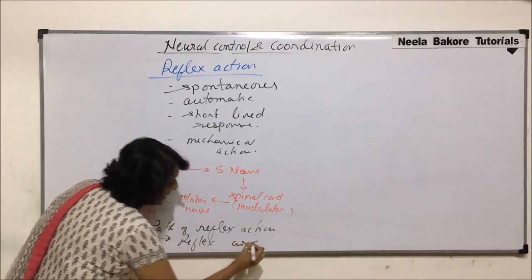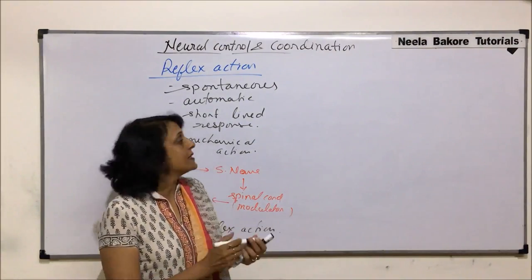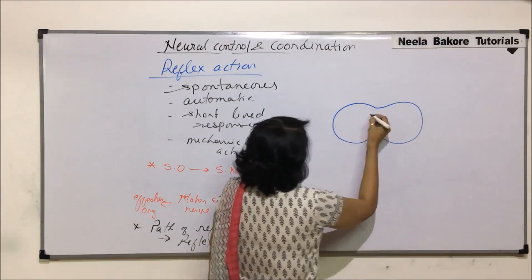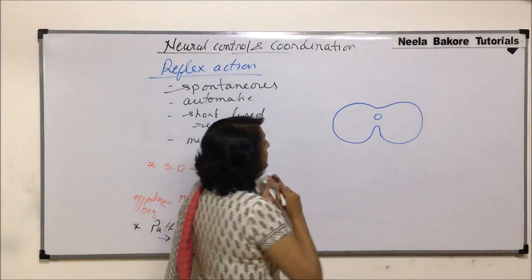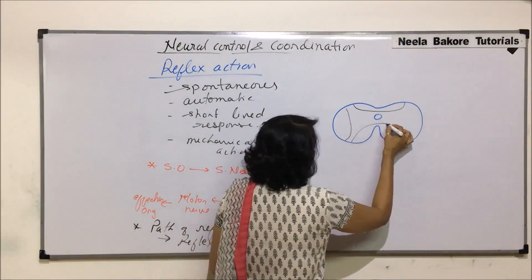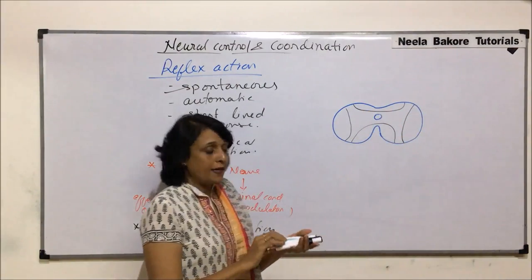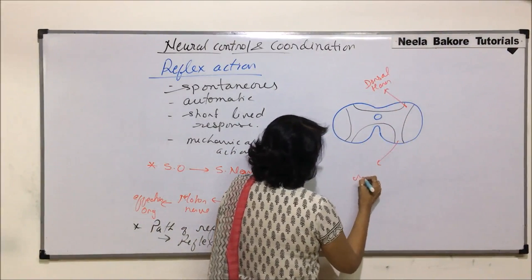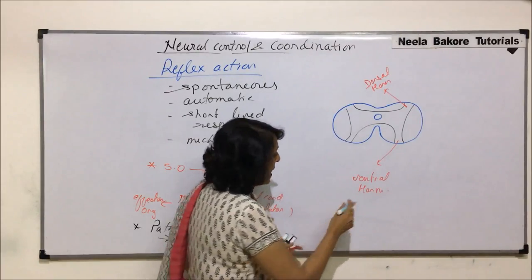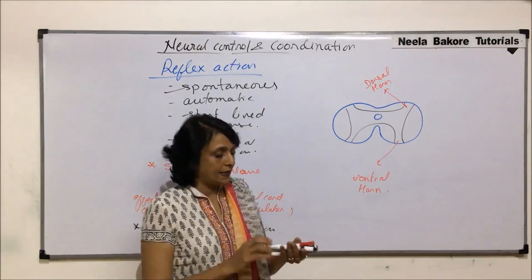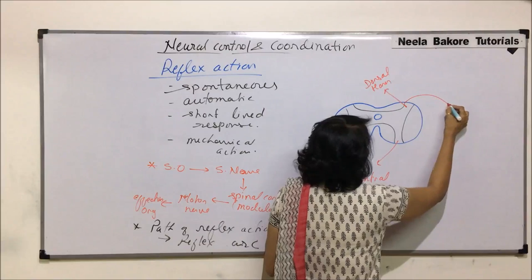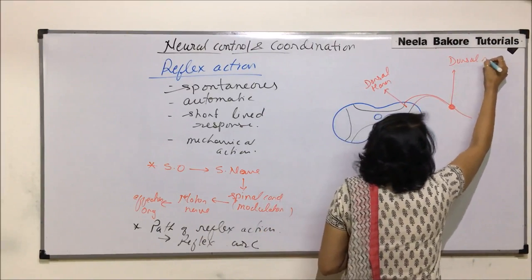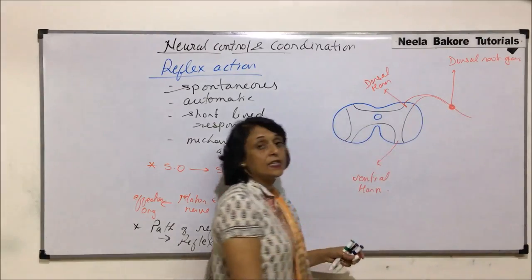Let us now draw the path and understand what exactly is happening. We draw the cross-section of the spinal cord, showing the gray matter in its H-shape, with the dorsal horn and the ventral horn. The fiber that emerges from the dorsal side has a ganglion — this is called the dorsal root ganglion — and this is the sensory nerve.